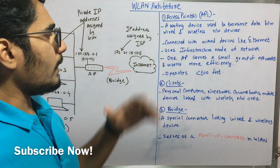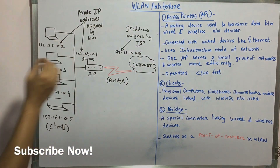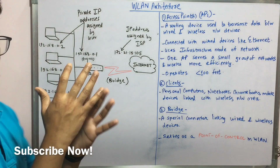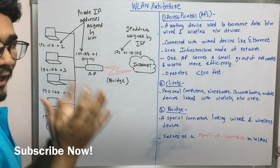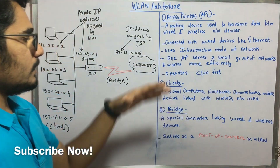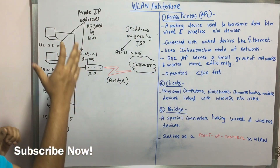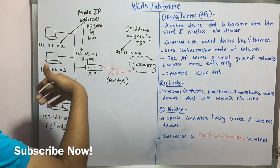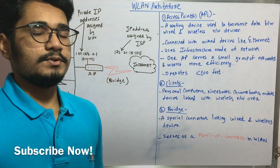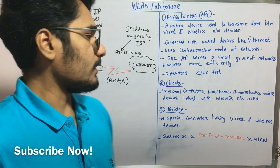Therefore, you follow an infrastructure mode of topology for this entire network. One AP can serve a small group of network and it works more efficiently in that particular small region or locality. If it operates within a very small group, then it can operate within less than 100 feet. In order to extend your coverage or to broadcast your services over a large area, you can just increase the number of APs — that is, access points — in your network.